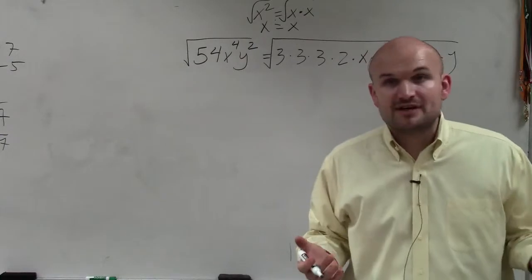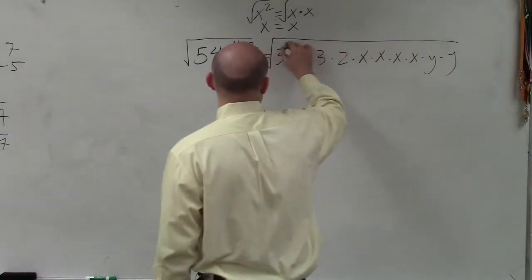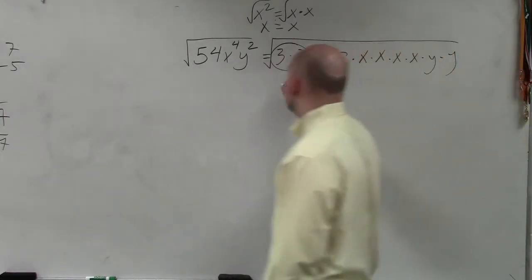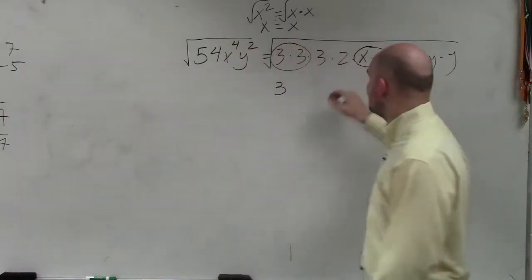So by using the prime factorization, which is helpful, all we simply need to do is say, alright, I can take the square root of 3 times 3, which is just 3.